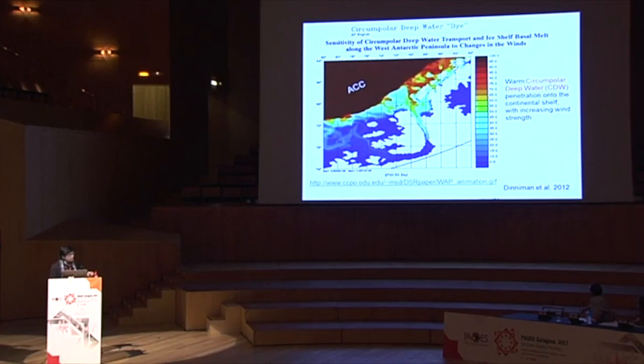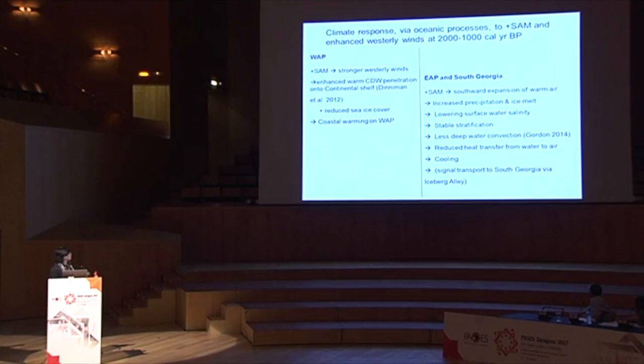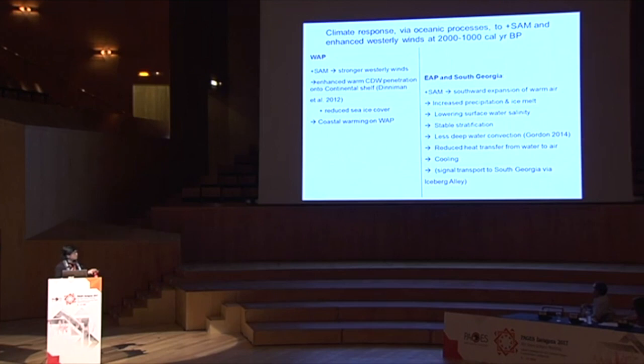To summarize the speculation about 2,000 to 1,000 years ago: stronger westerlies with a positive Southern Annular Mode on the West Antarctic Peninsula produced enhanced warm Circumpolar Deep Water penetration, reduced sea ice cover, and large-magnitude coastal warming. On the East Antarctic Peninsula and South Georgia, the positive SAM may have induced saltwater movement and increased precipitation and ice melt, resulting in lower surface water salinity and stable stratification, less deep water convection to the surface, reduced heat transport from water to air, and therefore cooling.